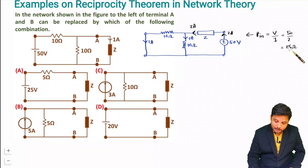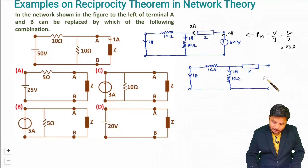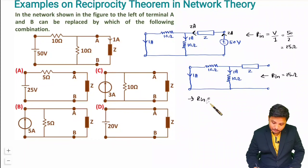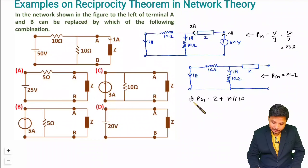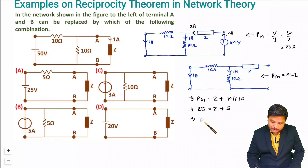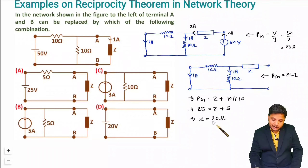The input resistance R_in equals voltage divided by current — that is 50 divided by 2 — giving R_in = 25 ohm. Now, redrawing the circuit, R_in is Z in series with the parallel combination of 10 ohm and 10 ohm. So: 25 = Z + (10 parallel 10) = Z + 5. Therefore, Z = 25 − 5 = 20 ohm.